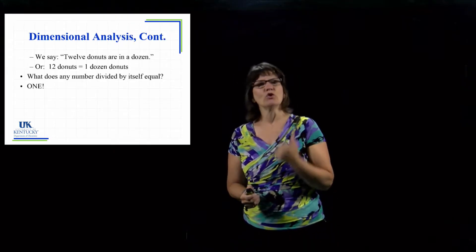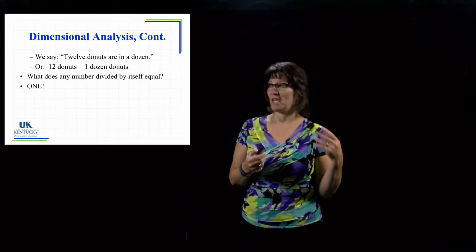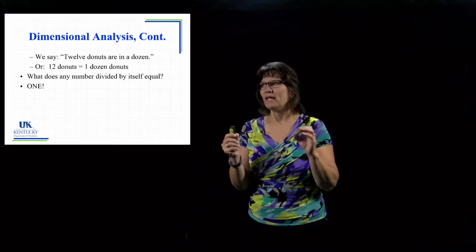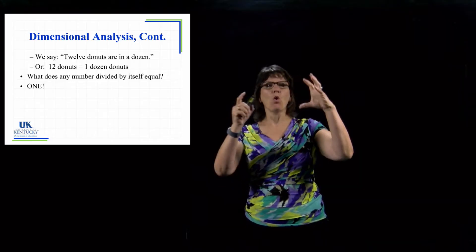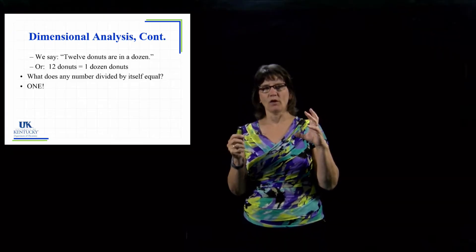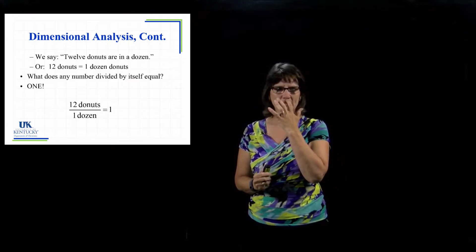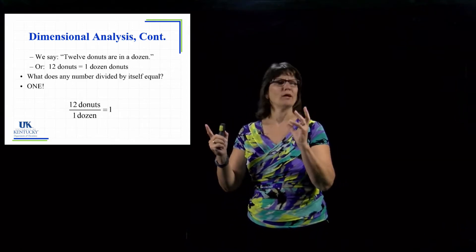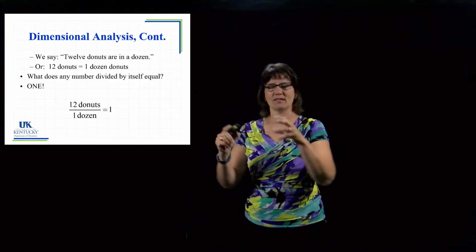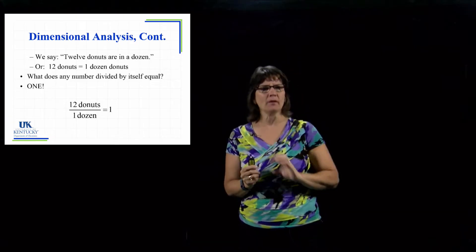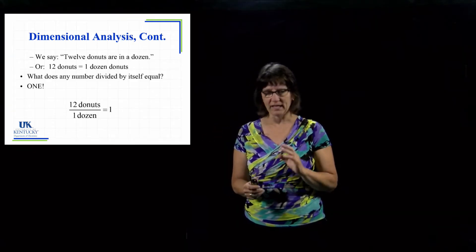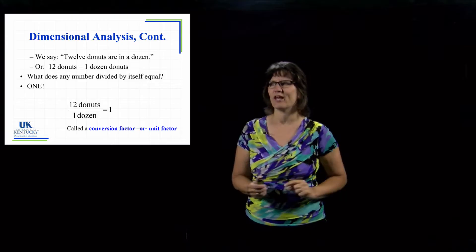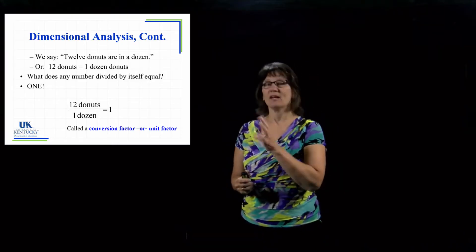In dimensional analysis, we're going to use that concept. We could say that there are 12 donuts in a dozen — 12 donuts equals one dozen donuts. So if we set up a dimensional analysis piece, we call this a unit factor, or conversion factor, because it's used to convert between units. There are 12 donuts divided by one dozen — they're equal amounts on top and bottom. This is a glorified one, a fancy way of writing the number one. Anything divided by itself is equal to one.